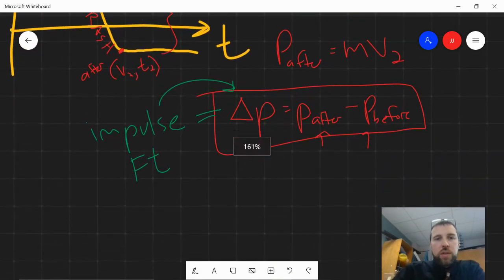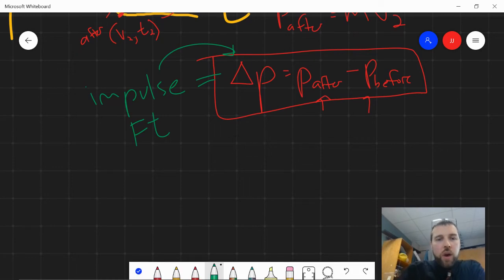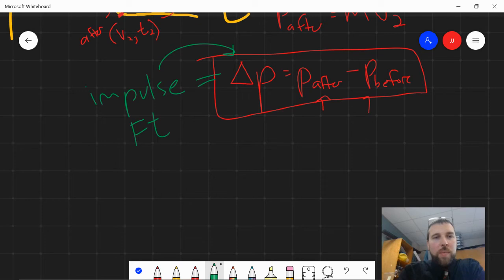Okay. So, now that we know our change in momentum from final momentum minus initial momentum, we can set up this equation. Force times time is equal to that change in momentum that we just calculated, or we could set it up as the single mass, same mass, times the change in velocity, right?